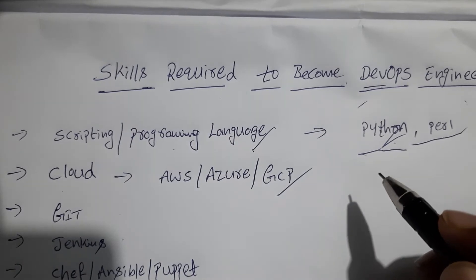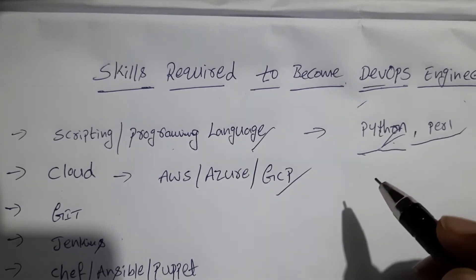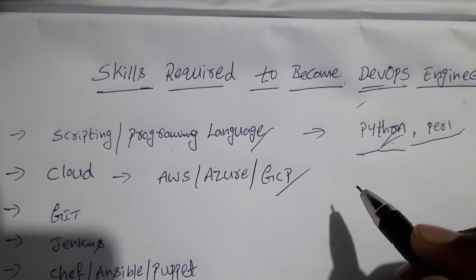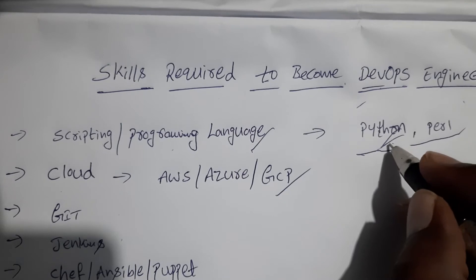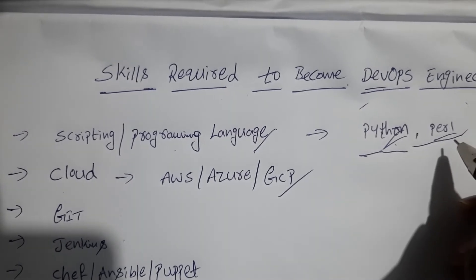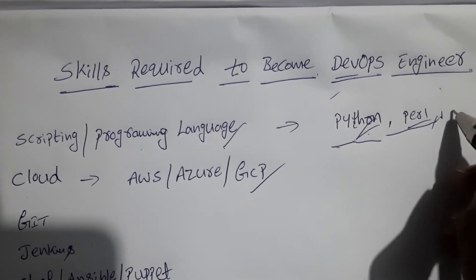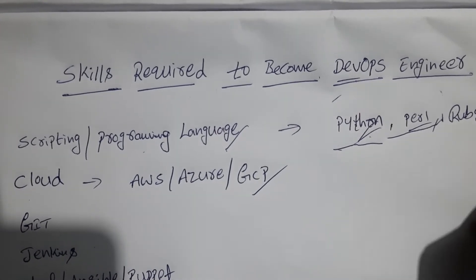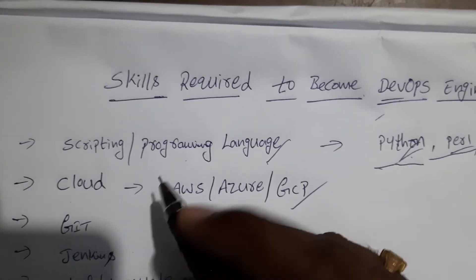Python can work both for small scripts as well as full-fledged application development. There are other scripting languages as well, such as Perl and Ruby.